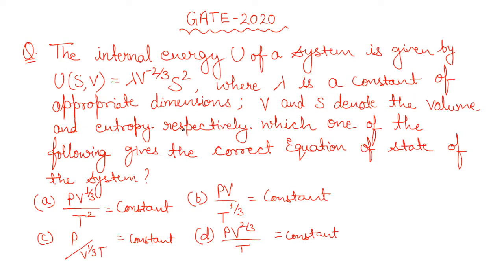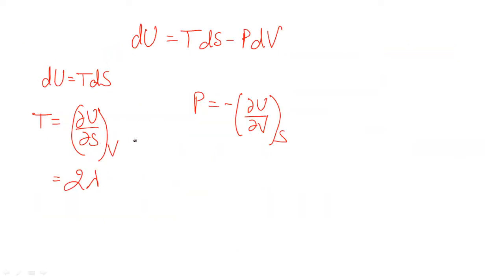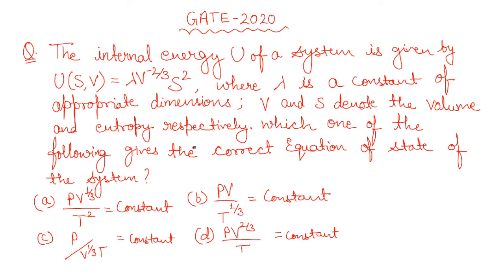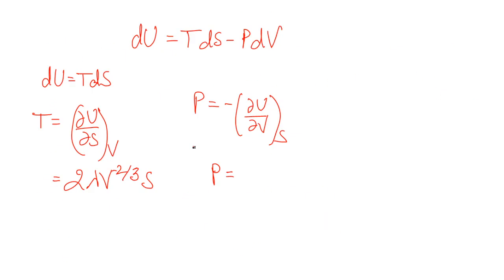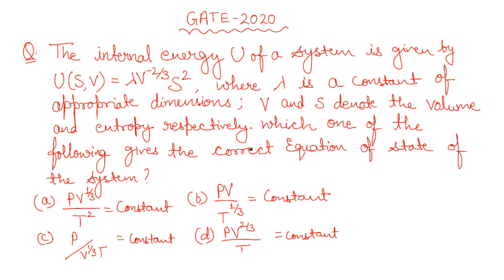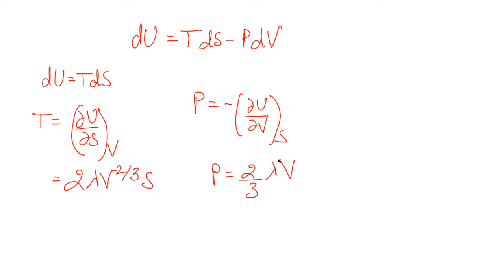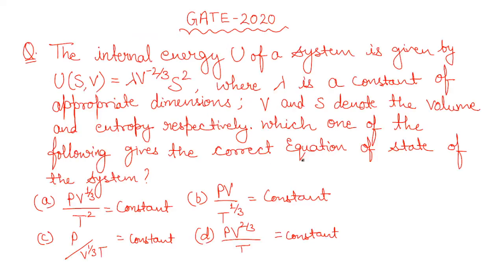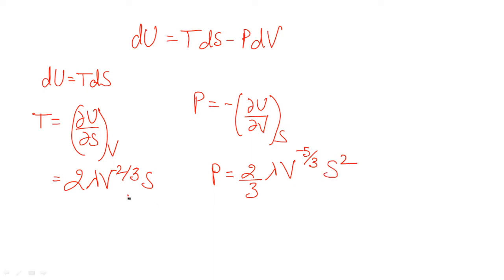Differentiating U = λ V^(−2/3) S² with respect to S at constant V: T = 2λ V^(−2/3) S. This is equation 1. Differentiating with respect to V at constant S: P = −λ · (−2/3) V^(−2/3 − 1) · S² = (2/3) λ V^(−5/3) S². Note the double negative becomes positive, and the power on V becomes −5/3. This is equation 2.